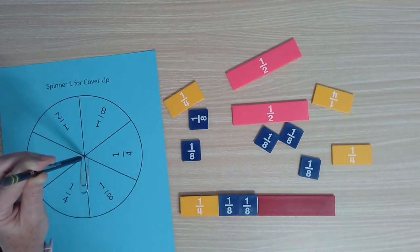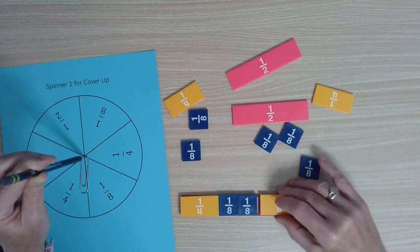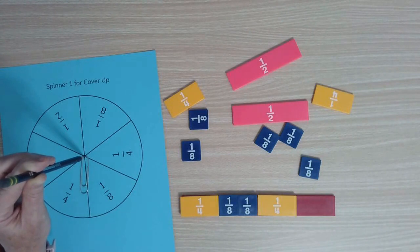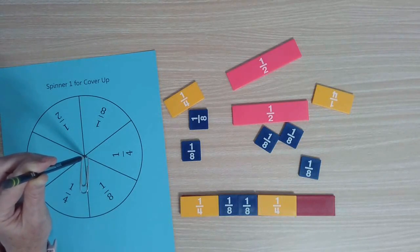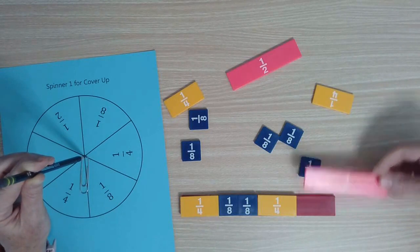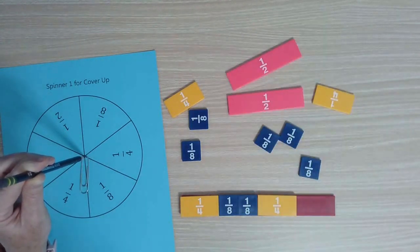I spin again and get one-fourth. An interesting question at this point might be, what do I want to spin now so that I can win? You get the kids thinking about, for example, could I spin one-half now? No, because that would be greater than a whole, and I have to cover the whole exactly.